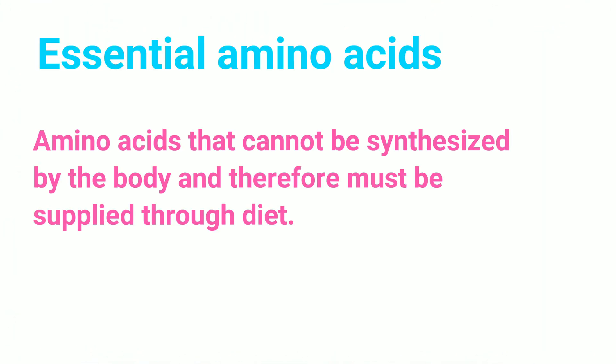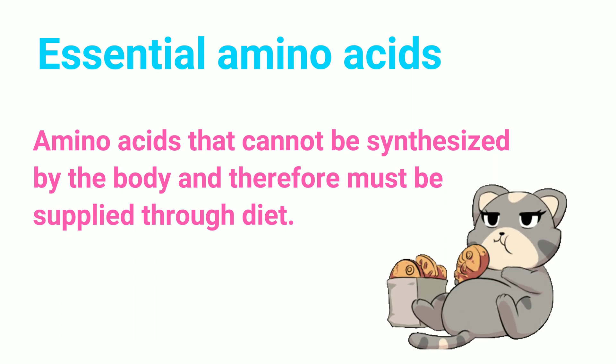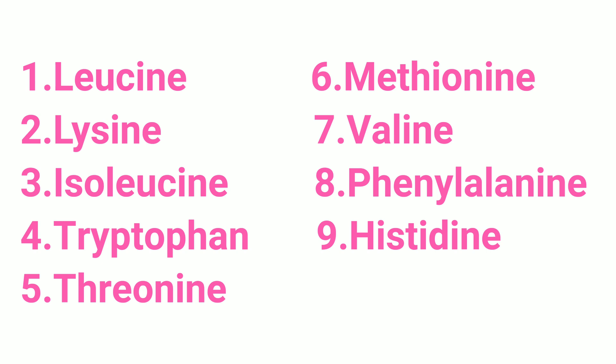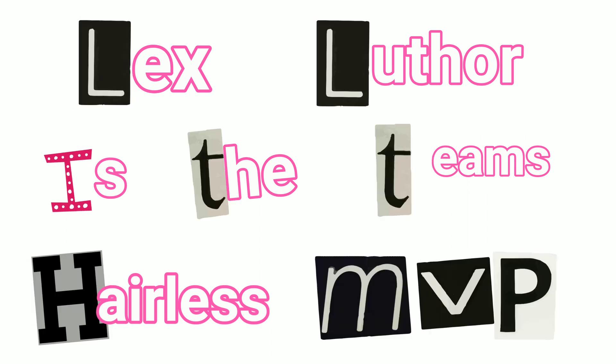Essential amino acids are the ones that cannot be synthesized by the body, and therefore must be supplied through diet. They include leucine, lysine, isoleucine, tryptophan, threonine, methionine, valine, phenylalanine, and histidine. Let's use the mnemonic to remember this classification: Lex Luthor is the team's perilous MVP, or most valuable player.